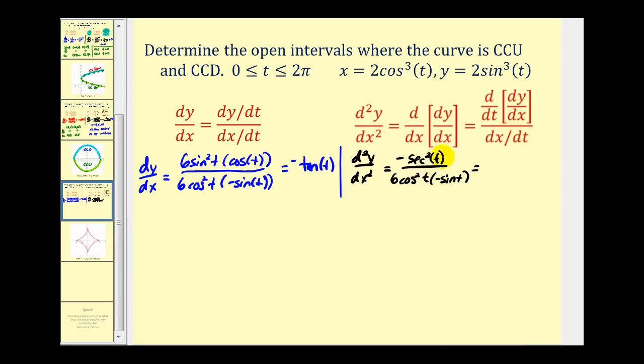Let's go ahead and simplify this. Notice we have a negative and a negative, so it will become positive. And secant squared t is the same as one over cosine squared t. So we'll have one over six cosine to the fourth t sine t.